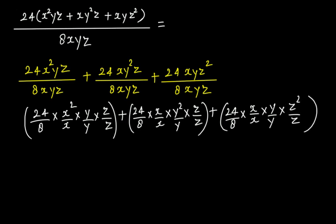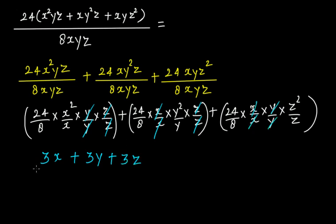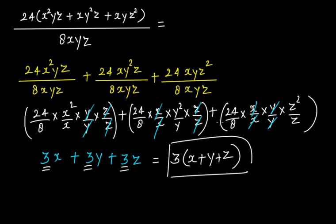From here: 24/8 = 3. x²/x = x, y/y = 1, z/z = 1, giving 3x. Then 24/8 = 3, x/x = 1, y²/y = y, z/z = 1, giving 3y. Then 24/8 = 3, x/x = 1, y/y = 1, z²/z = z, giving 3z. Since 3 is common: this equals 3(x + y + z). This is exactly the same answer we got using the common factor method.